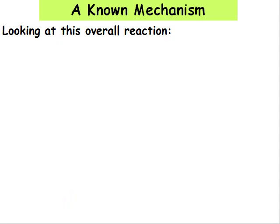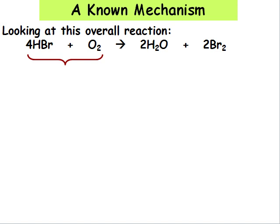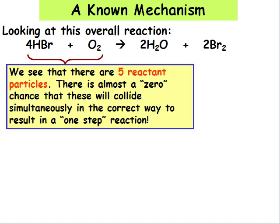Now we will have a look at a reaction mechanism that is known. Looking at this overall reaction and focusing on the reactants, we can see that there are 4 and 1, or 5, reactant particles. There is almost a 0% chance that these will collide simultaneously in the correct way to result in a 1 step reaction.